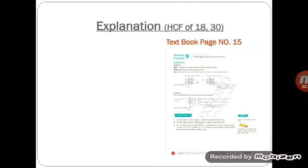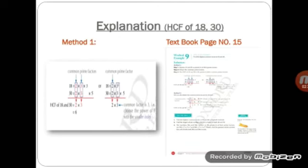Students, open your book to page number 15. Here you can see worked example nine. It is solved for the HCF of two numbers: 18 and 30. First, we understand it according to method one. You can see both numbers 18 and 30 are reduced to their prime factors. Then common factors are taken out, which are 2 and 3. 2 multiplied by 3 is equal to 6, and that is the HCF of 18 and 30.